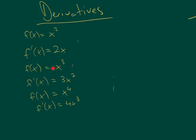So this is x to the 1. Here the 3 is placed in front, and then we lowered the 3, made it 2. Here the 4 is placed in front, lowered the 4, made it 3. So if we want to write this version of the Power Rule generally, then it would be: if f of x is x to the n, then f prime of x, the derivative of f of x, would be n times x to the n minus 1.